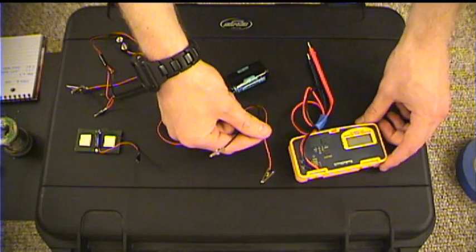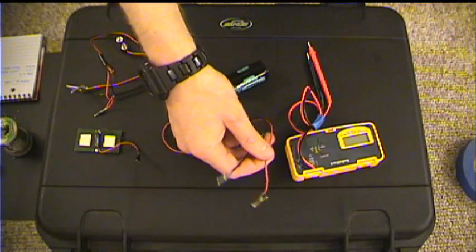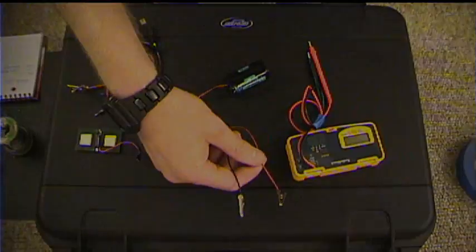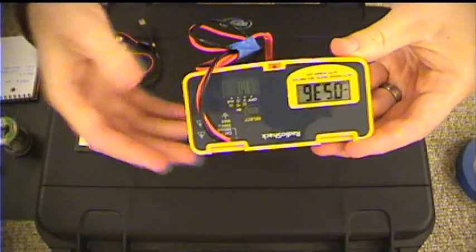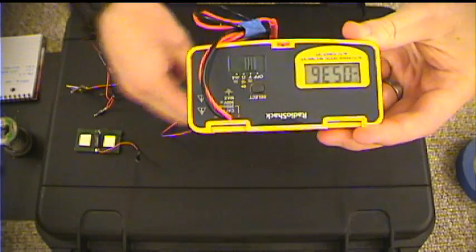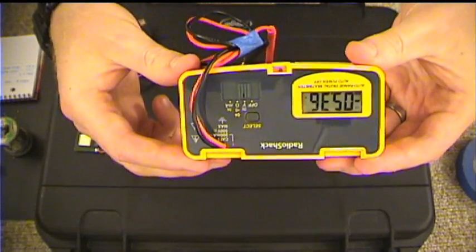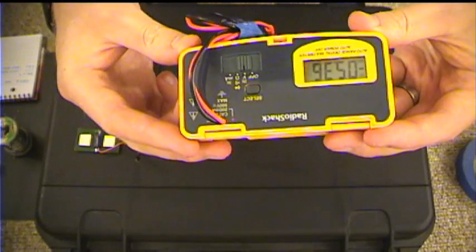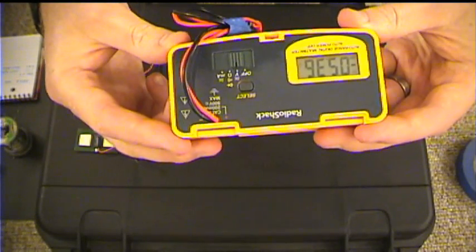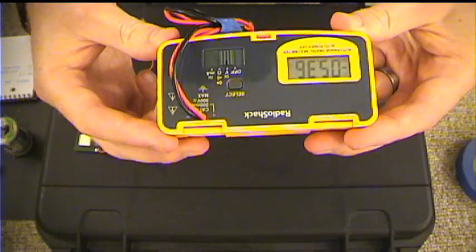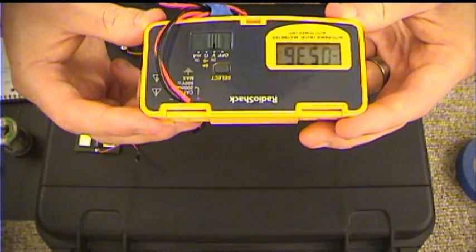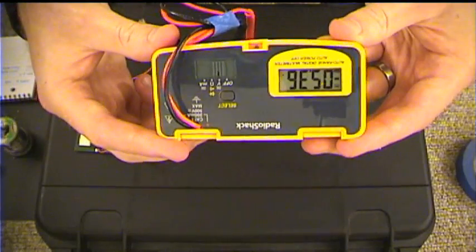Multimeter right here, just to check the voltage and make sure that the battery pack is outputting at the proper voltage. Alright, you can see that right there, it's outputting 5.36 volts, so actually that's quite a bit more than it's supposed to be putting out, which is 4.8, but for all intents and purposes that's not going to cause any problems.